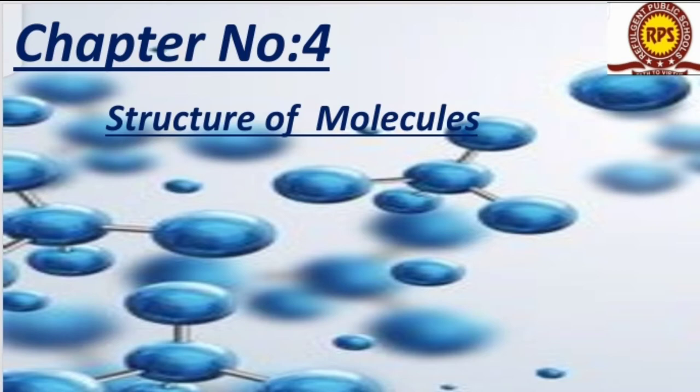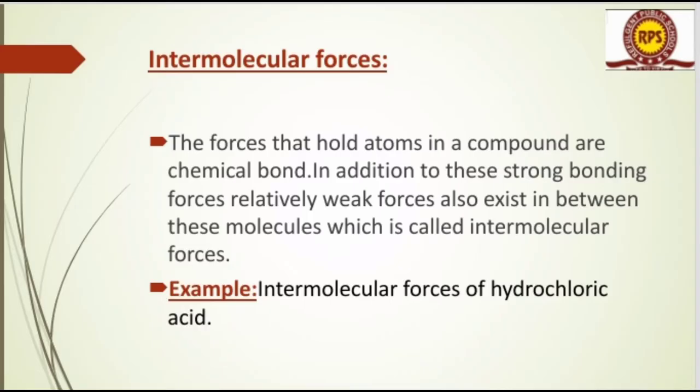In our previous lecture we learned about some types of bonds formed by the combinations of atoms and which types of characters they carry — the ionic bond, covalent bond, and coordinate covalent bond, and some types of polar and non-polar covalent compounds.